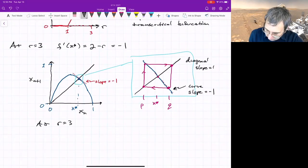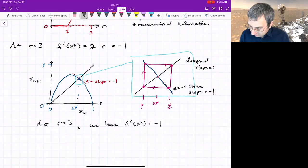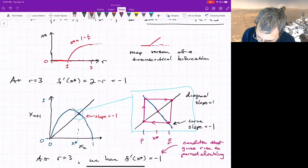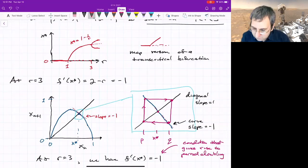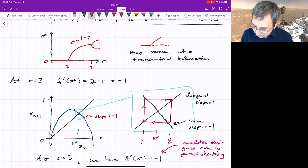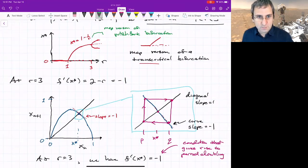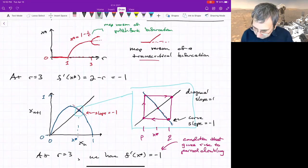Here is x*. We're going between two other points, let's call them p and q. So it seems like there's something important about the slope or the multiplier going to -1. This was the diagonal slope equal to 1, and this is the curve of the map with slope -1. But the parameter value right next to that, it looks like period 2 behavior can happen. At r=3, we have the slope or multiplier goes to -1, and that's the condition that gives rise to period doubling.